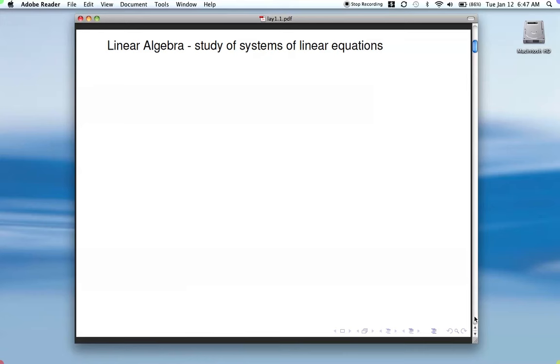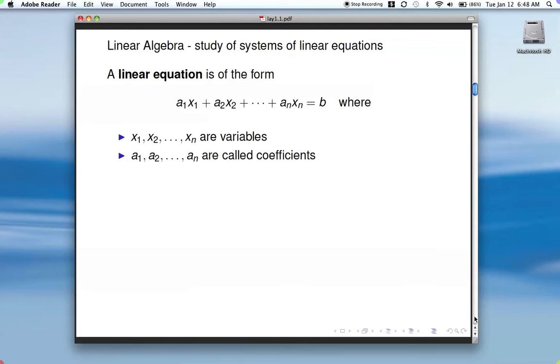So that begs the question, what's a linear equation? Well, a linear equation is one of this form: a1x1 plus a2x2 plus dot dot dot anxn equals b. And here the x's are the variables. The a's are called coefficients, and b is the right-hand side value.